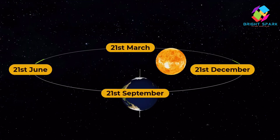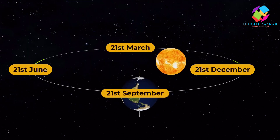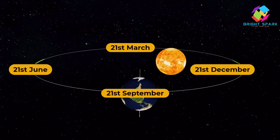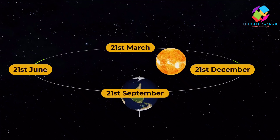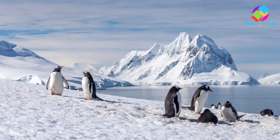Crazy facts about seasons! The longest day of the year is called the summer solstice — it happens around June 21st in the northern hemisphere. The shortest day of the year is the winter solstice, around December 21st. The coldest place on earth, Antarctica, has six months of winter with almost no sun.